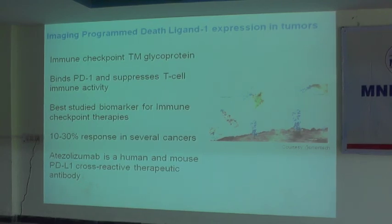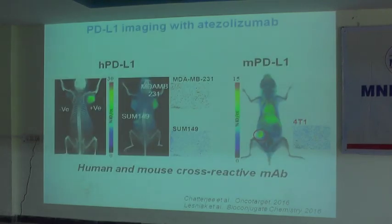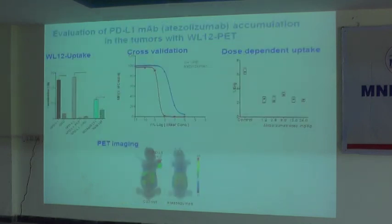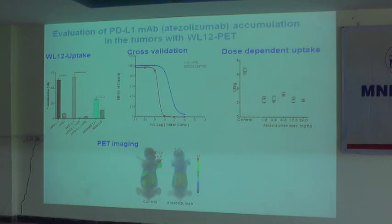We got into PD-L1 imaging and developed imaging agents. We now have a nice peptide where we can look at PD-L1 expression in tumors. One thing we observed is that with these imaging agents, we can visualize the antibody reaching the tumor and see how much of it is occupying the tumor's PD-L1 expression. So in this new imaging approach, we are looking at whether the therapeutic antibody is really reaching the tumor and to what extent it is occupying PD-L1.